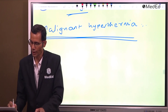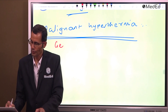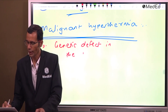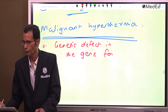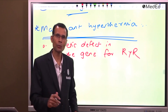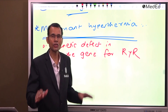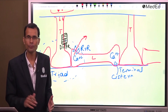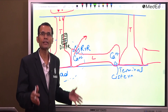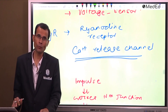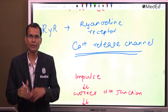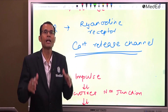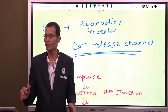Malignant hyperthermia results from a genetic defect in the gene that codes for RYR. So the RYR gene is defective, and therefore the protein RYR — the calcium release channel — is defective. This means calcium release will be defective: excessive calcium release results in excessive muscle contractions and heat generation.